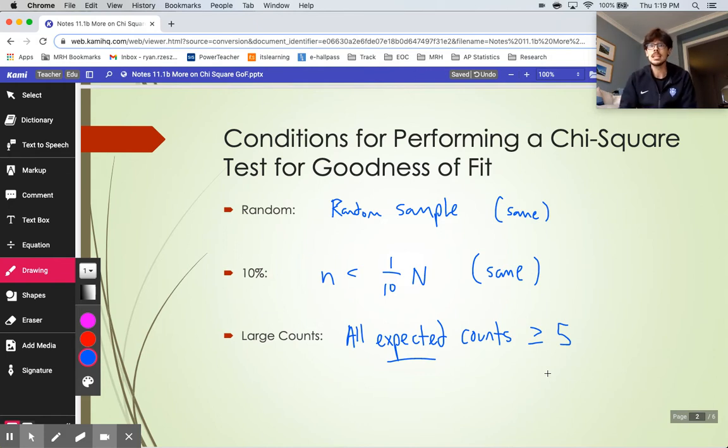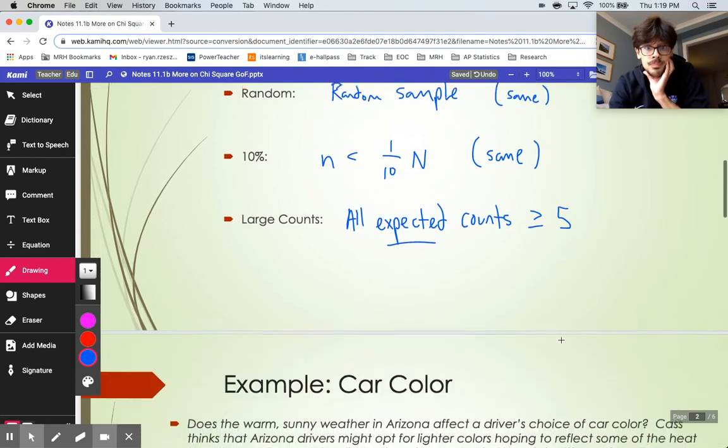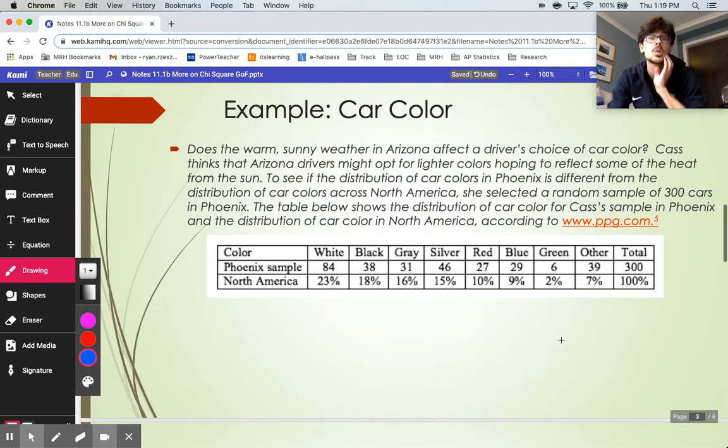So our context for the day is going to involve car color, looking at cars in Arizona. The distribution for car colors across North America is shown in the table. This is across North America, and then this student Cass is wondering if things are different in Arizona where the weather is a lot hotter. Maybe people choose their color of their car differently. You don't want a black car in the heat because it's going to just be dreadful when you walk into it super hot everywhere.